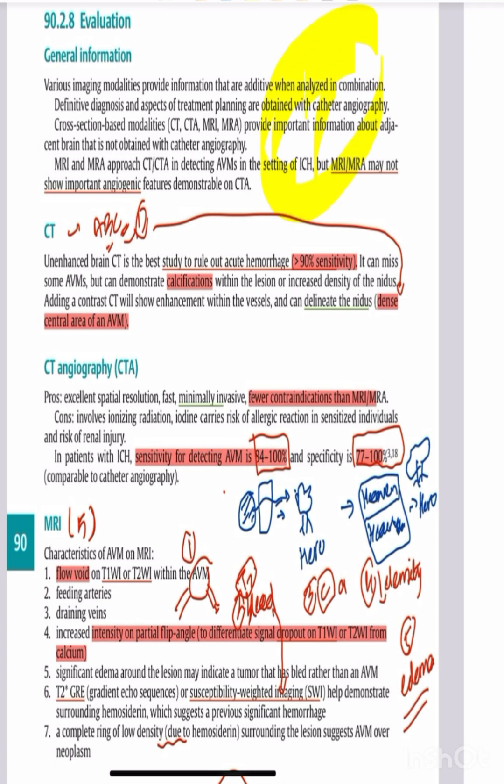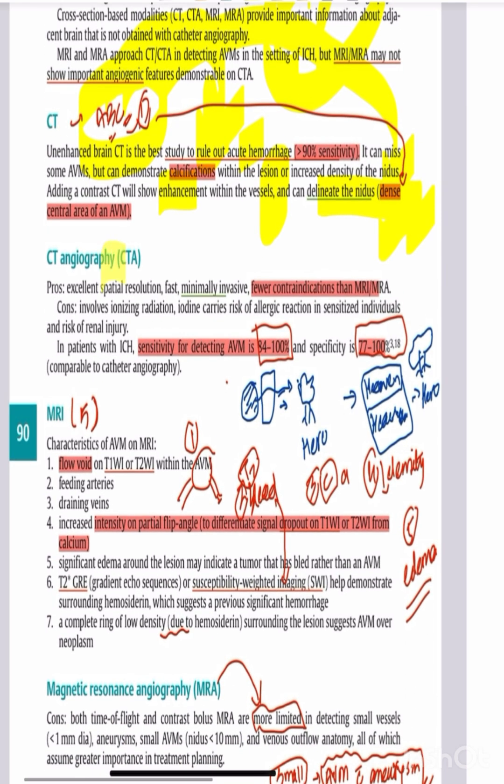On CT, you can see several features: A is acute bleed, B is blood, C is calcification, and D is density. CT with contrast will delineate the nidus, which is demonstrated on CT angiography.